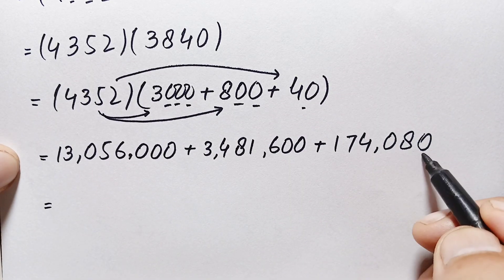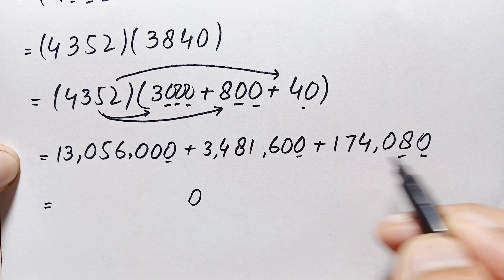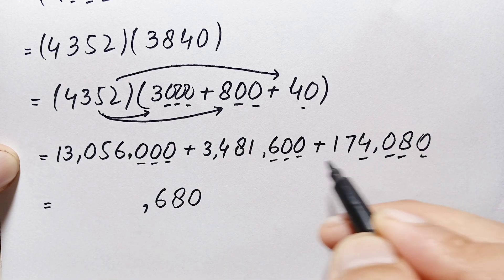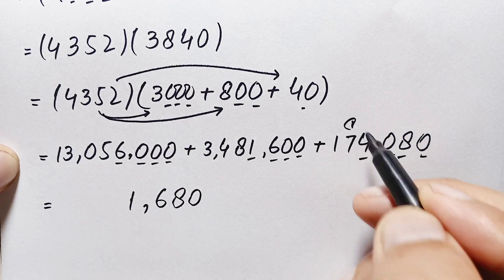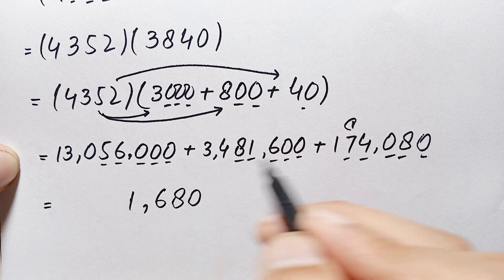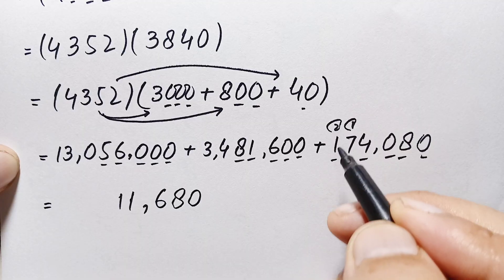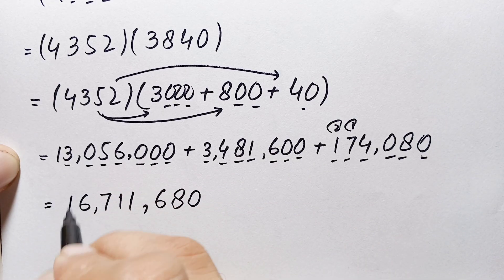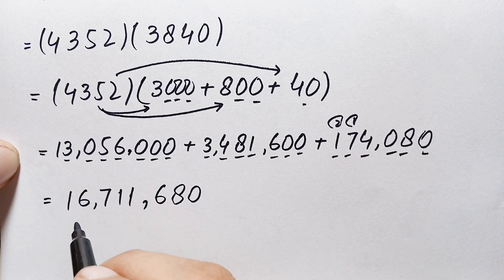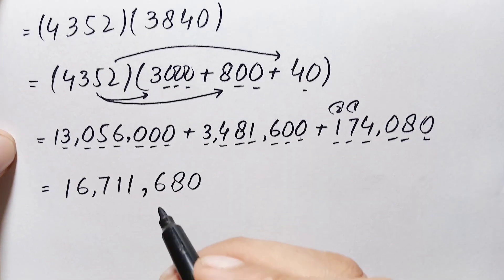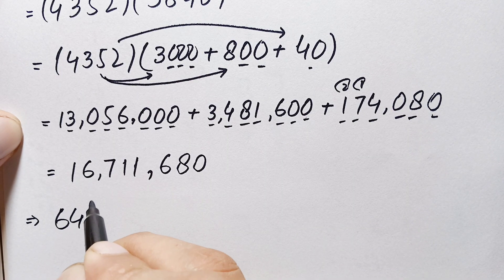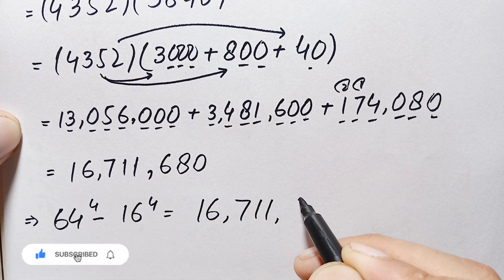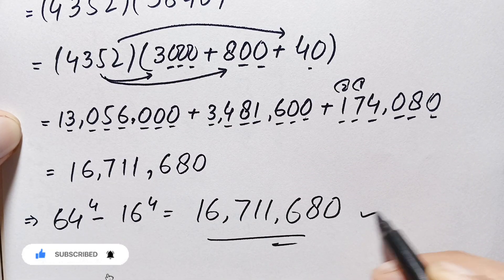Finally, we add the three partial products: 13,056,000 plus 3,481,600 plus 174,080. Adding column by column: 0; 8; 6; 5 plus 6 is 11, carry 1; 7 plus 1 is 8, 8 plus 8 is 16, 16 plus 5 is 21, carry 2; 1 plus 2 is 3, 3 plus 4 is 7; 3 plus 3 is 6; and 1. The final answer is 16,711,680. So the value of 64 raised to power 4 minus 16 raised to power 4 is 16,711,680.